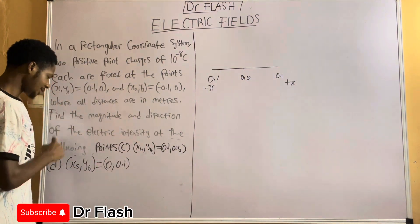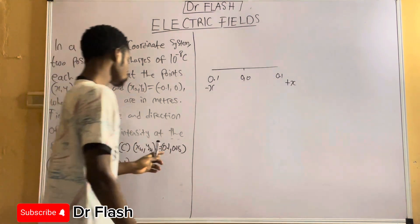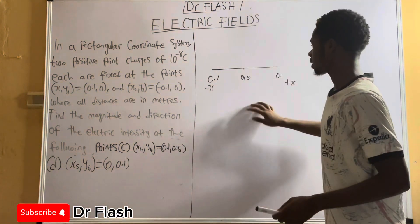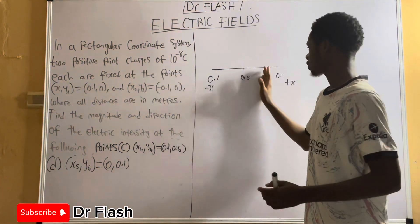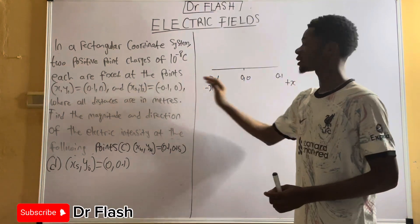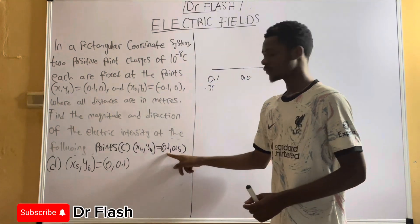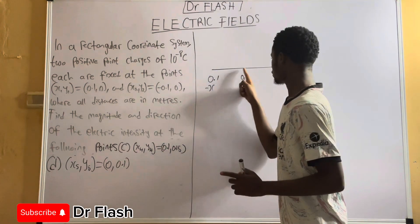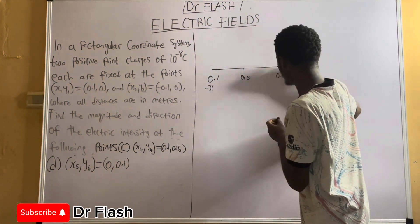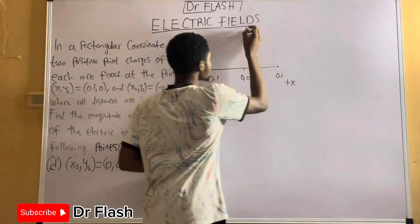We're going to start with the first point: 0.1 comma 0.15. How do we locate it on the diagram? The center is the origin, with positive and negative x-axis, and upward positive y, downward negative y. 0.1 is first on the x-axis — from the origin to that point is 0.1 positive. Then we trace to the y-axis for 0.15.